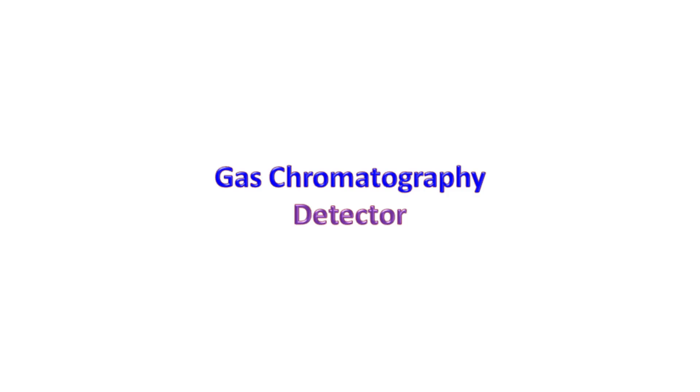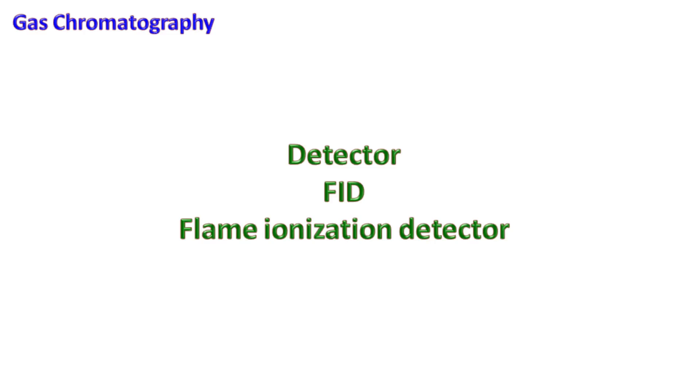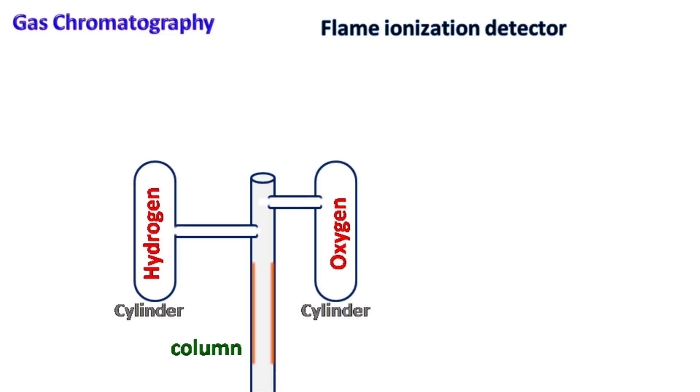One of the most common detectors used with gas chromatography is flame ionization detector or FID. The flame ionization detector has three inlets: one for the carrier gas which comes from the column, and the other two for hydrogen and oxygen. The igniter ignites hydrogen and oxygen to produce a flame.